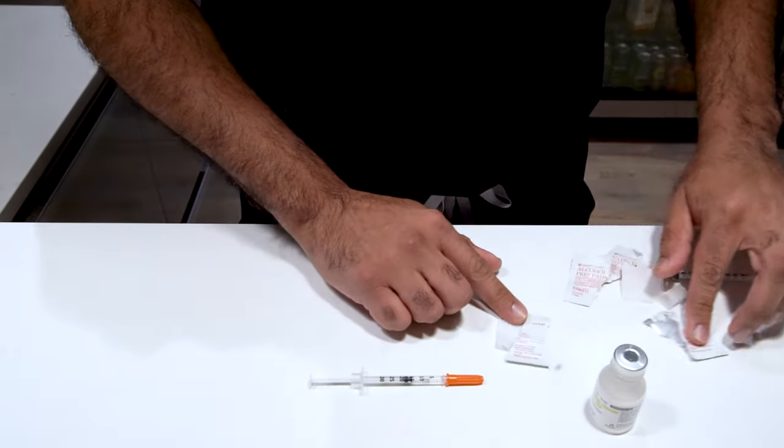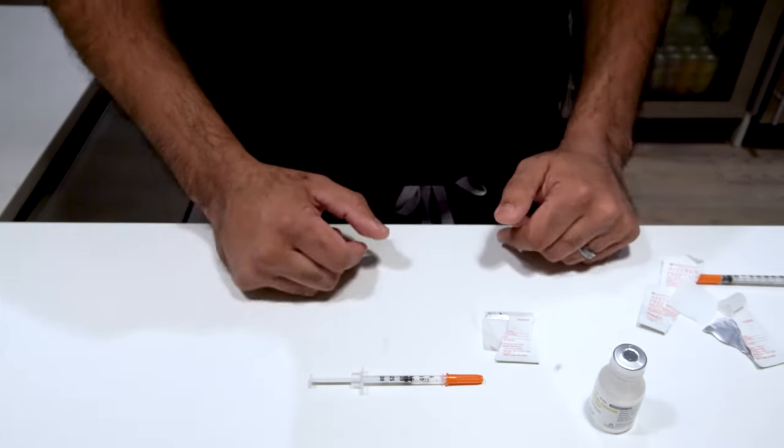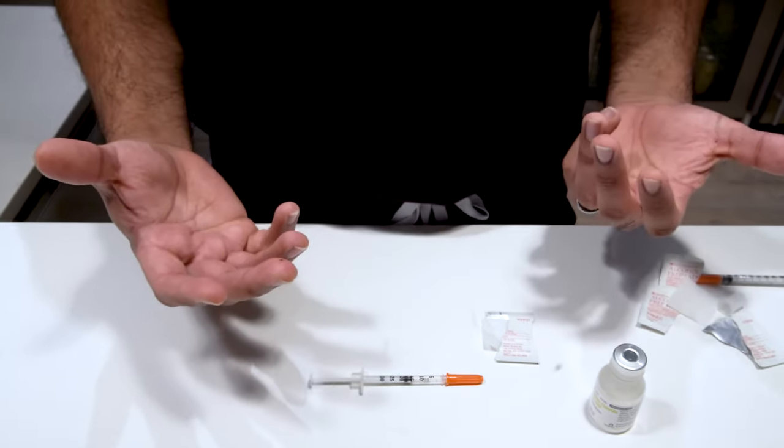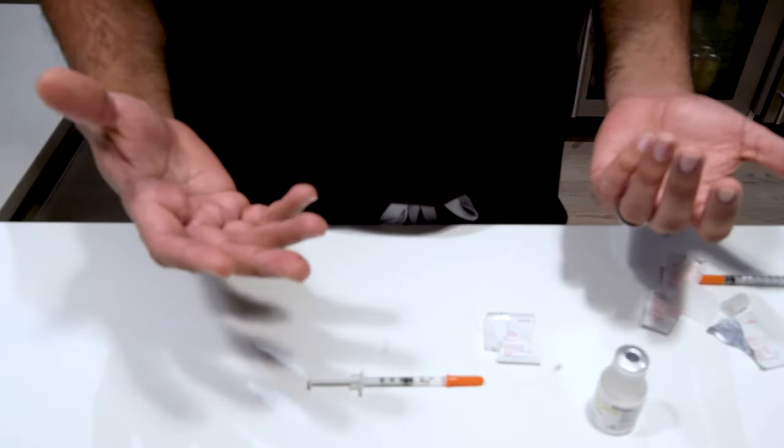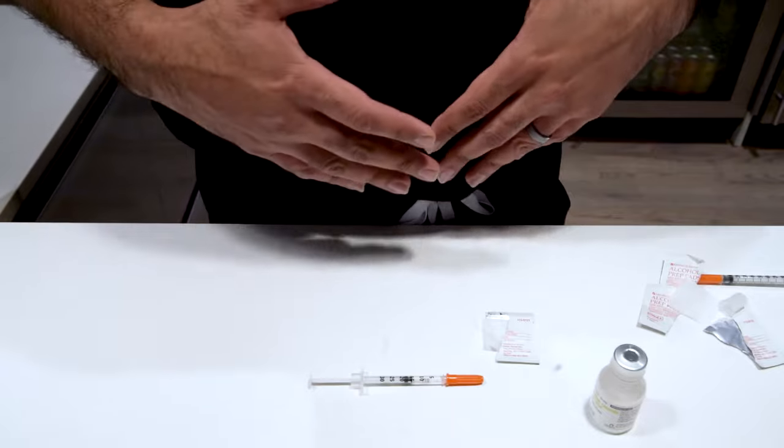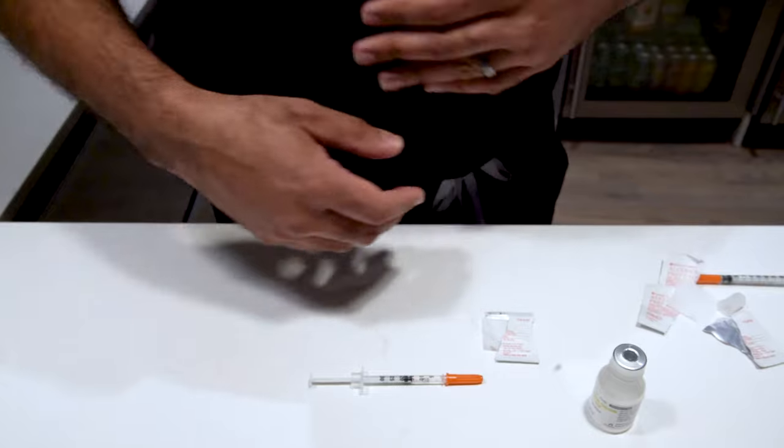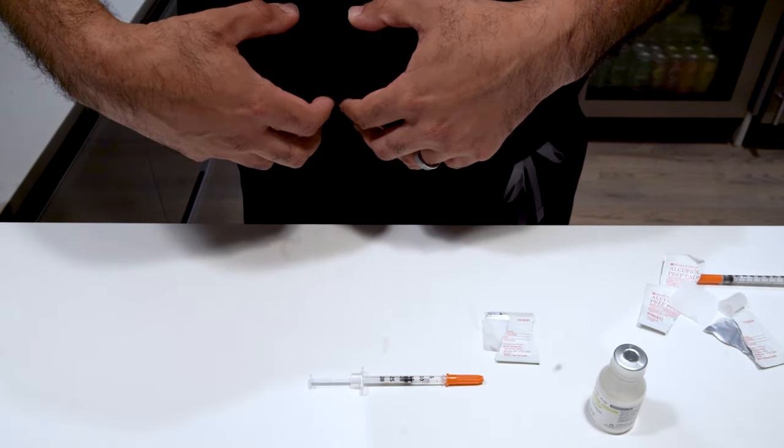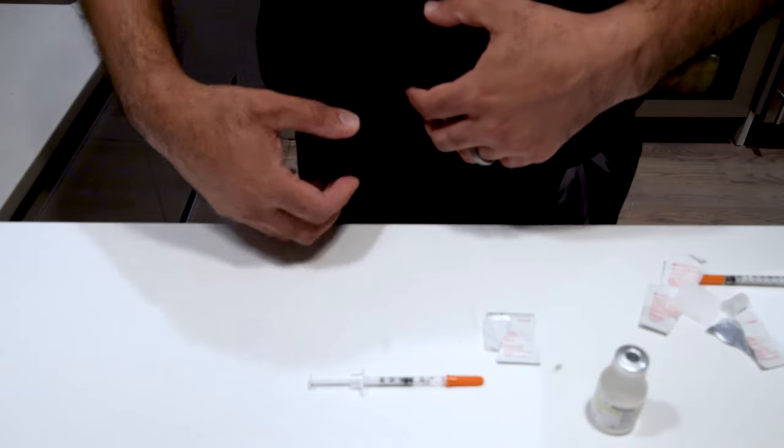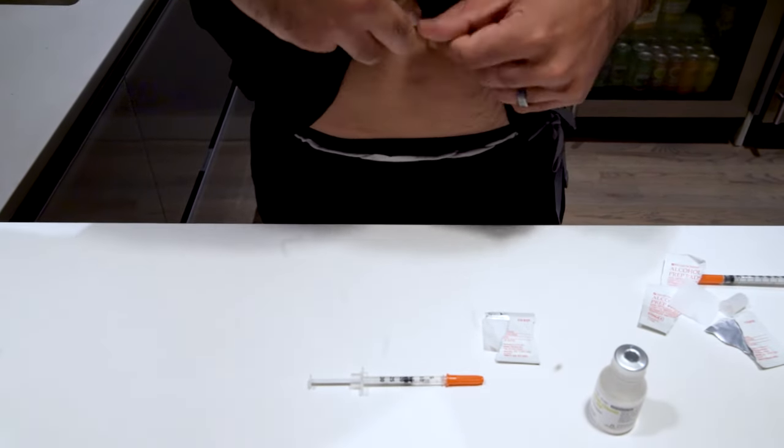Now I'm going to take my second alcohol pad and use that to prep my skin. Choosing a spot on your body to inject, this is totally up to you, but the principle is you want to make sure you have fat underneath the skin you inject. So a lot of people like using the abdomen, the love handles, the thigh, or even the upper arm. I find out for myself that it's a lot easier to inject the love handles because it's right off my side.